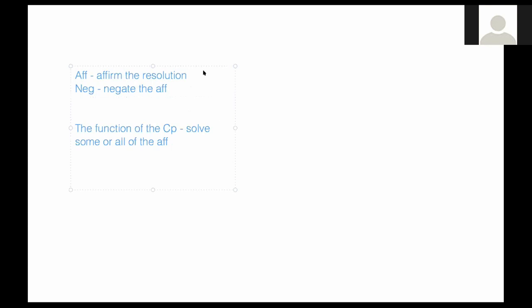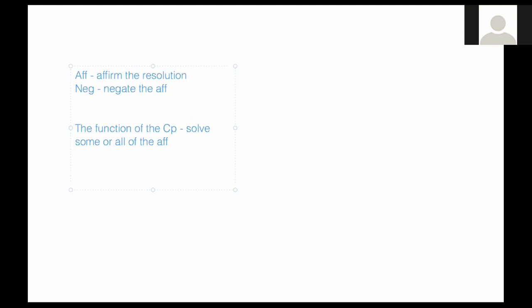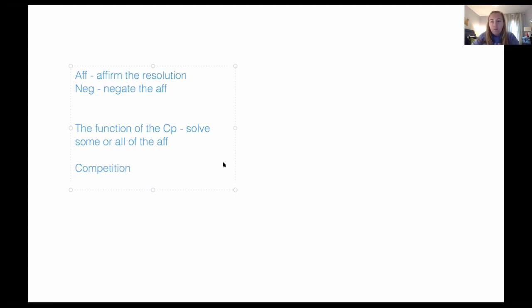Going back to the question of what the neg's role is in debate: they get to propose a counter plan because they only have to negate the aff and they're not really held to the resolution. The only thing they really have to do is prove an alternative mechanism to solve the aff with a valid opportunity cost. Something really important when thinking about the idea of a counter plan is the concept of competition.